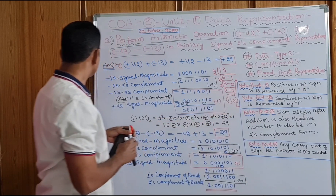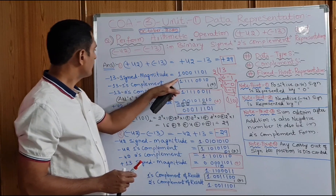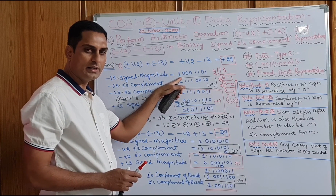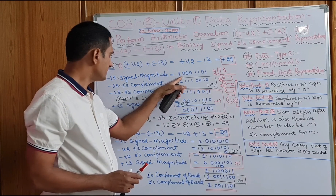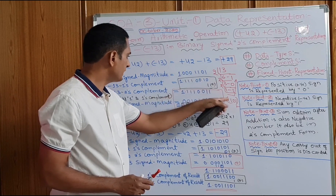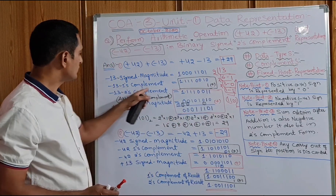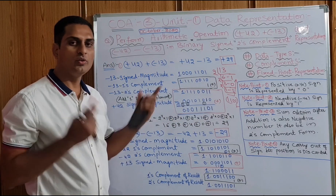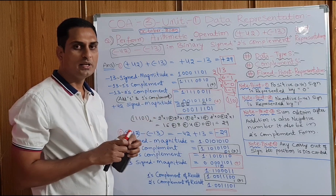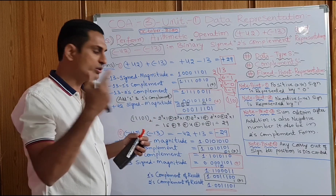So note point 1: negative 13 can be represented first in an 8-bit register. This is the binary number. Now 13's 1's complement — how we will get 1's complement is very simple: change 1 to 0 and 0 to 1. For example: 1, 0, 1 becomes 0, 1, 0.